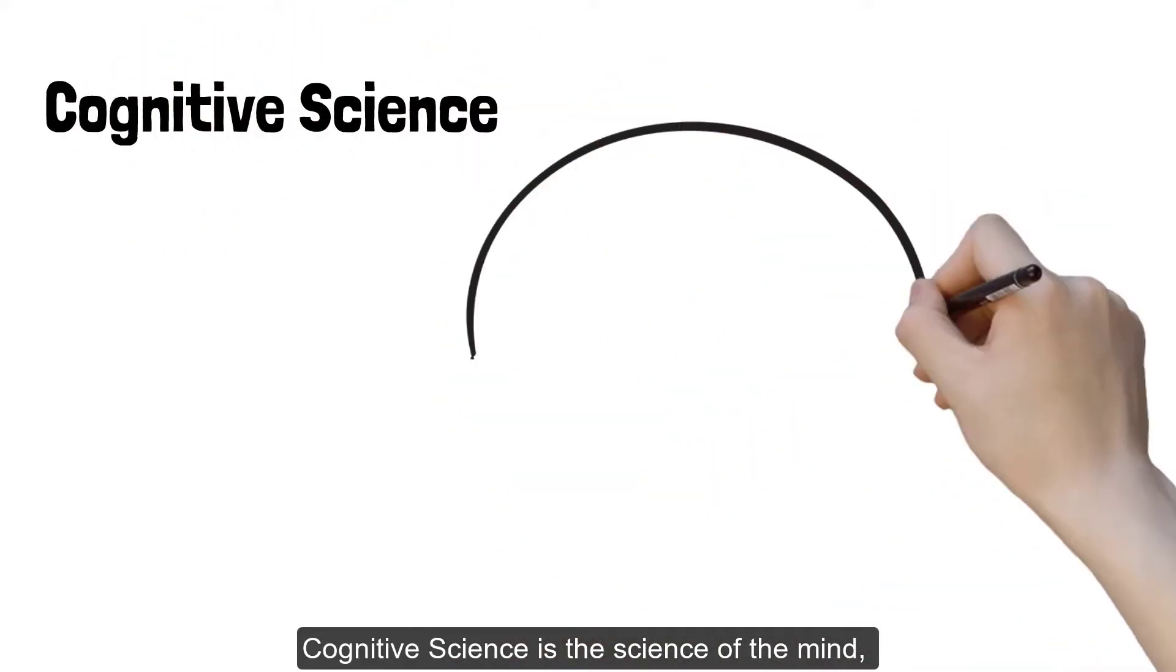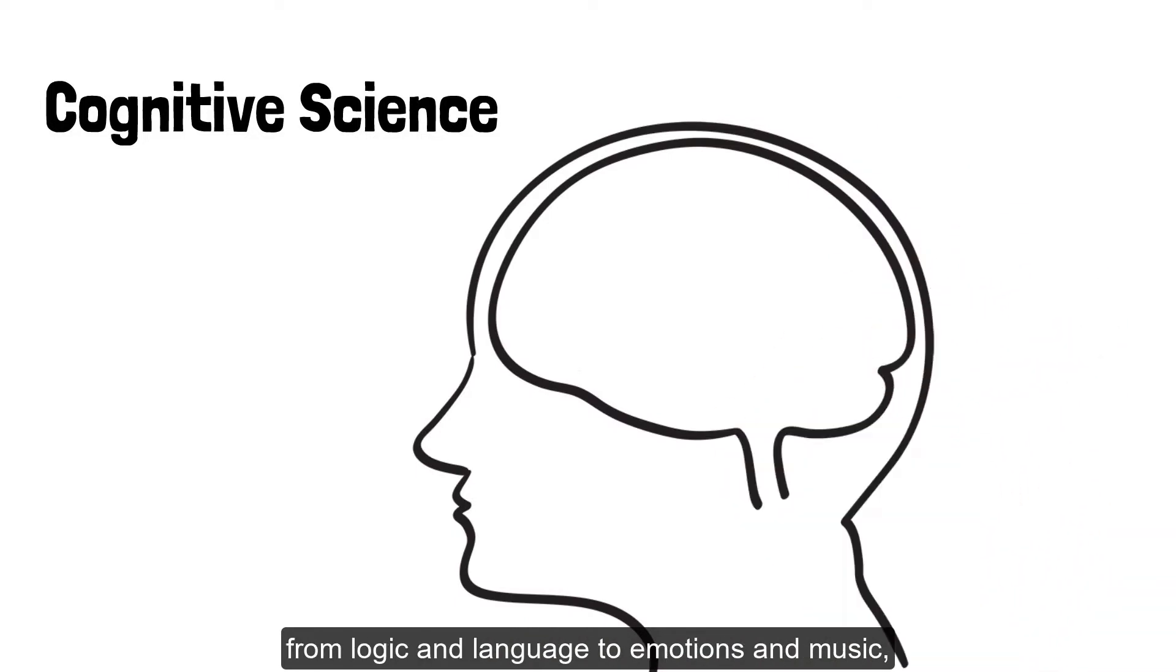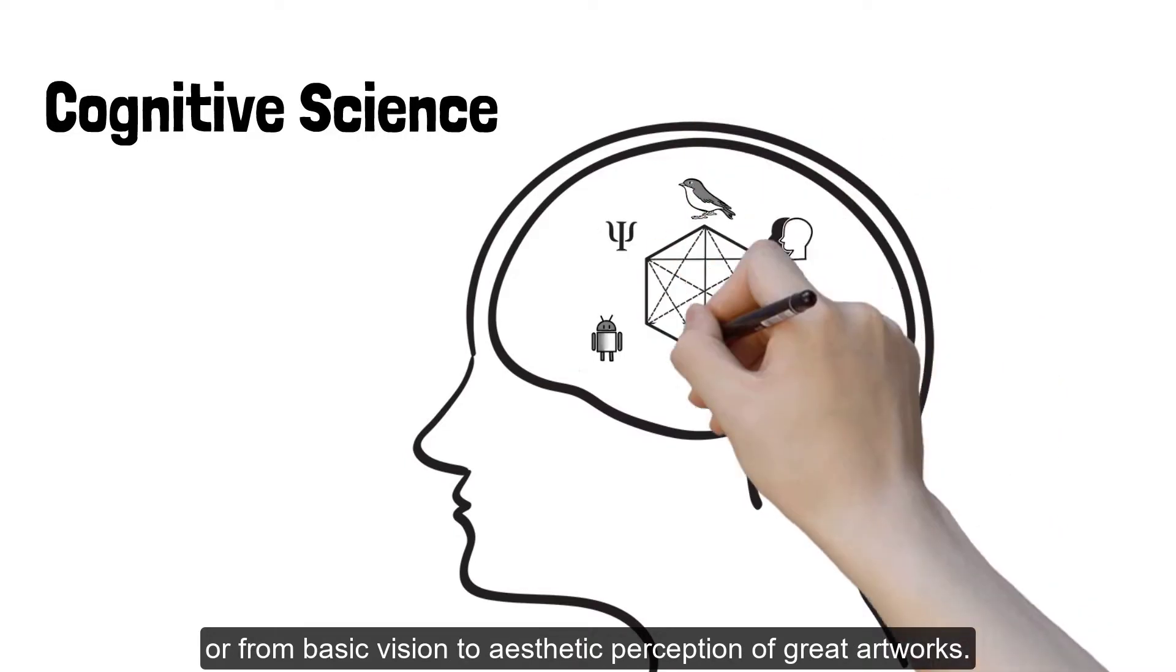Cognitive science is the science of the mind and tries to understand all aspects of minds, from logic and language to emotions and music, or from basic vision to aesthetic perception of great artworks.